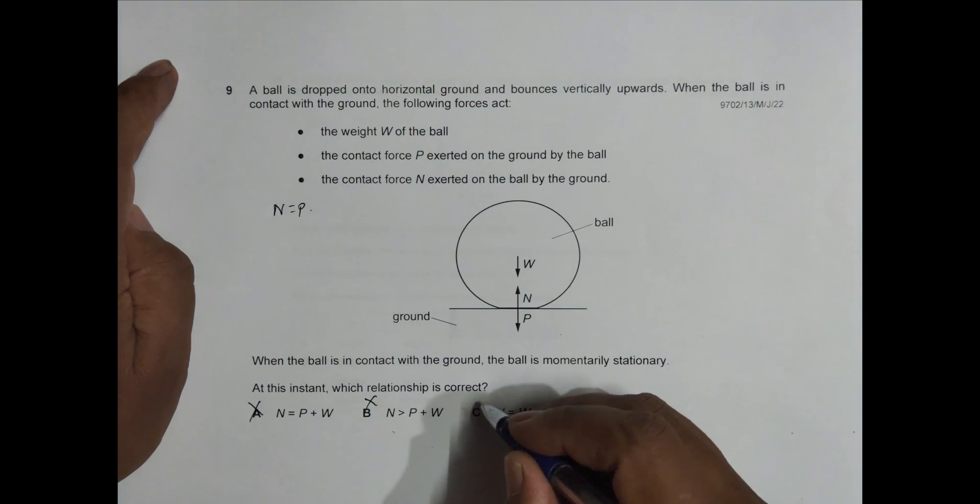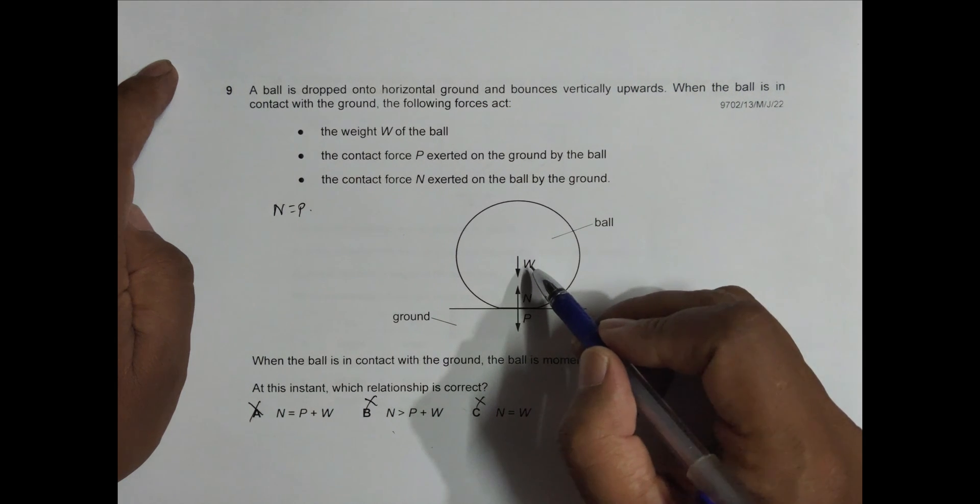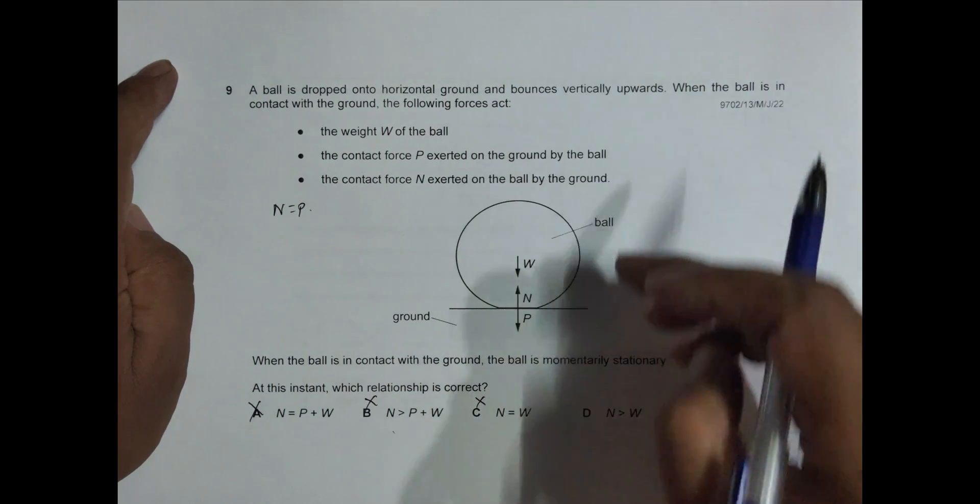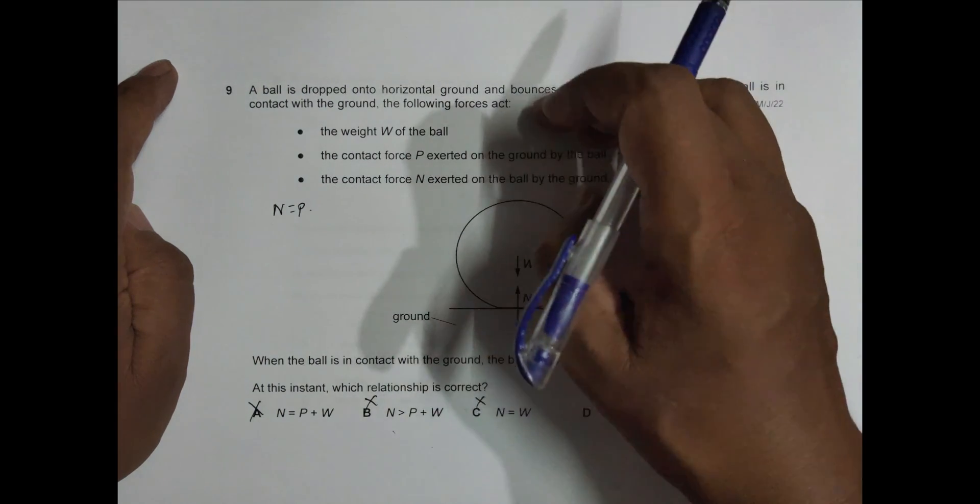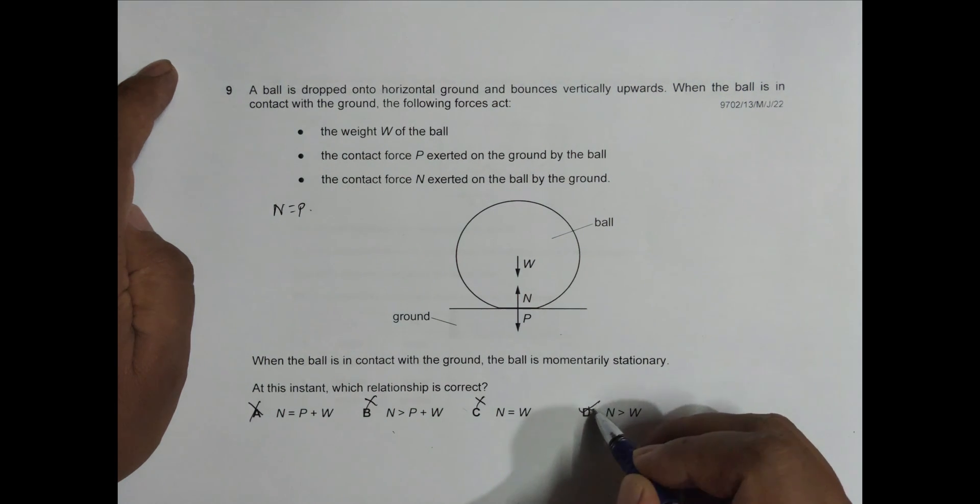And the only true one is this. It says N more than W, so there will be some resultant force upward. That's why the ball again rises. So stationary here and it rises is only because N is more than W. So D should be the correct choice, N more than W.